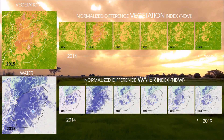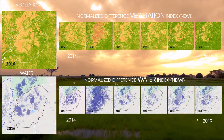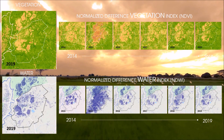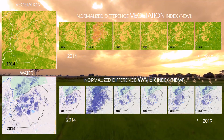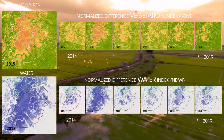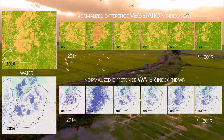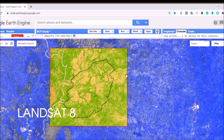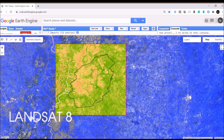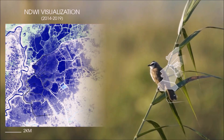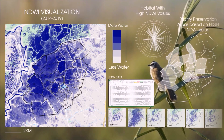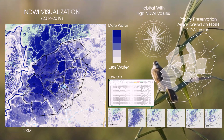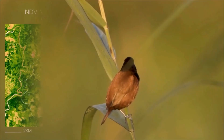Since GEE promises cutting-edge tools for environmental monitoring, we visualize the water bodies in the area for the last six years. Using Landsat 8 dataset, the Normalized Difference Water Index or NDWI is used to highlight water bodies for each year.